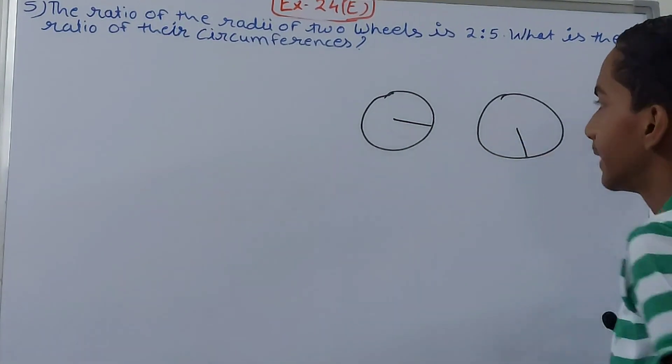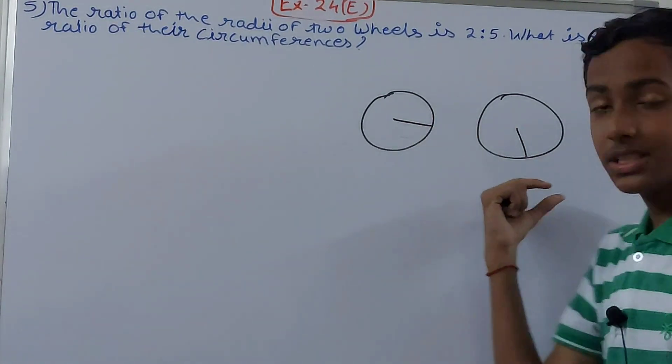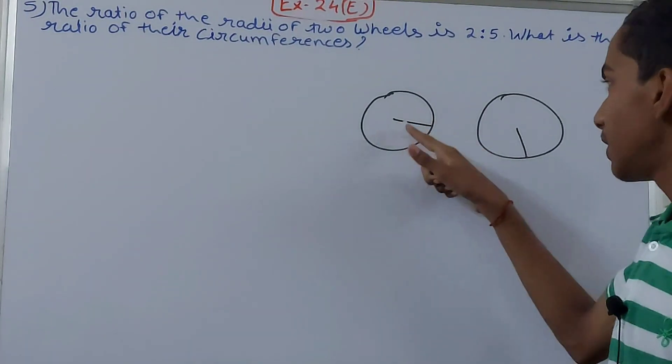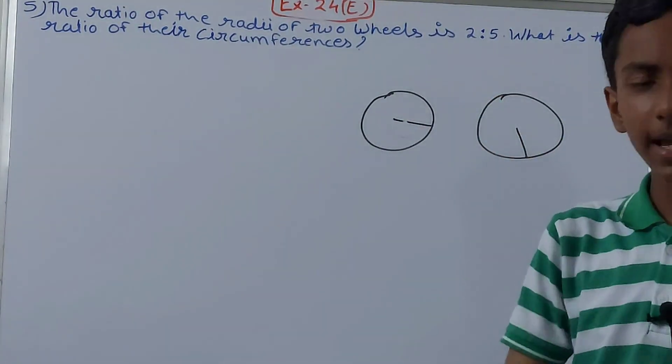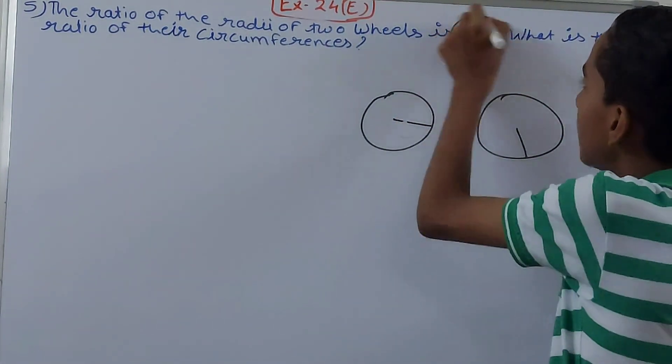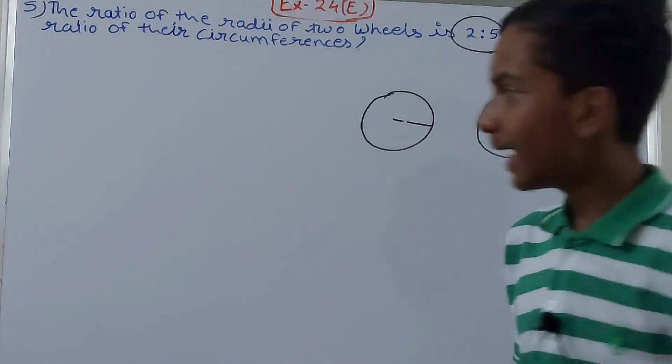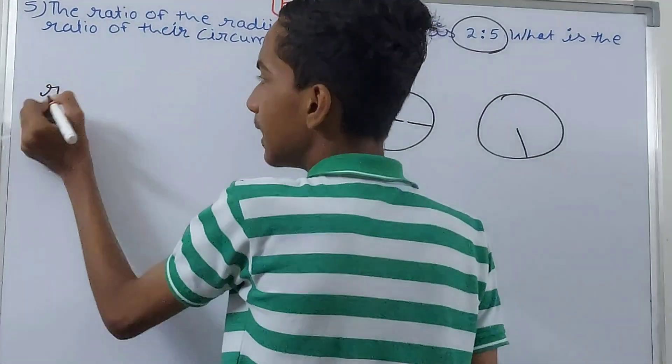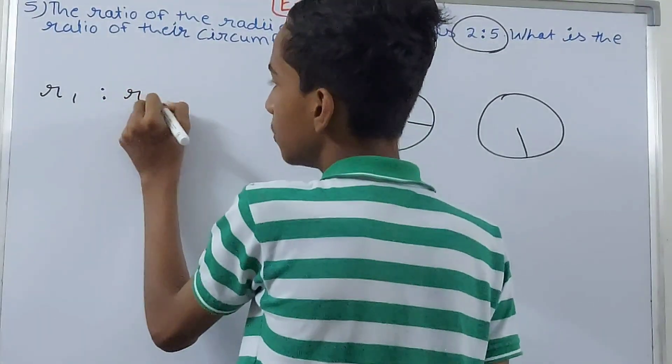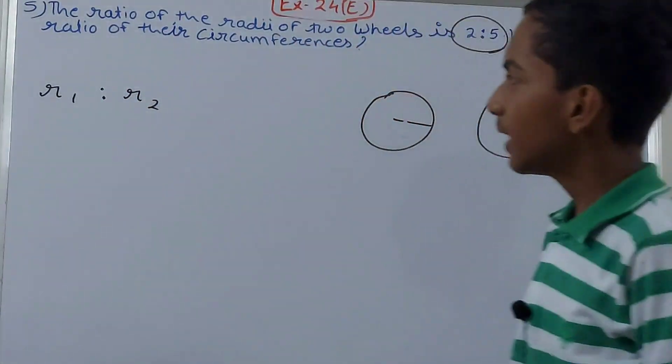After taking their length, this can be two centimeter, three centimeter, four centimeter, five centimeter, anything. We have got a ratio as two is to five.